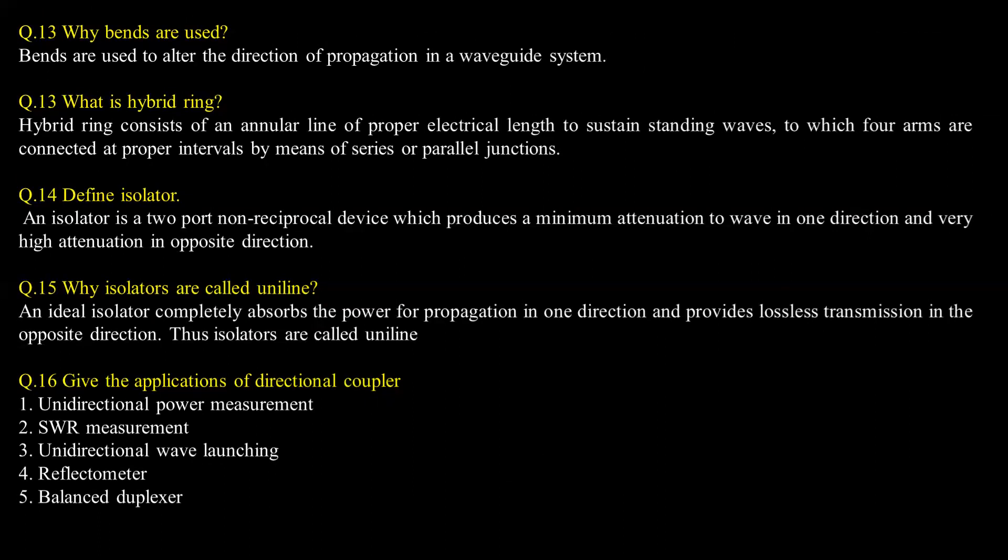What is a hybrid ring? Hybrid ring consists of an annular line of proper electrical length to sustain standing waves to which four arms are connected at proper intervals by means of series or parallel junctions. Define isolator. An isolator is a two-port non-reciprocal device which produces minimum attenuation to waves in one direction and very high attenuation in the opposite direction.